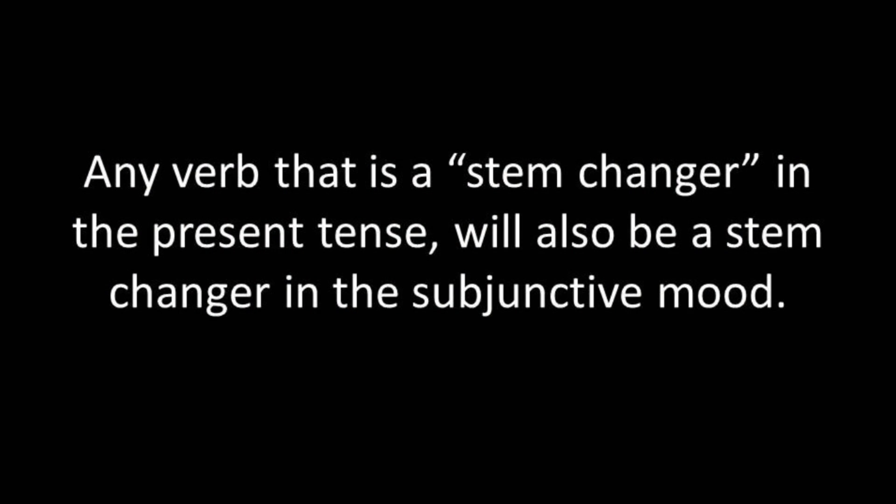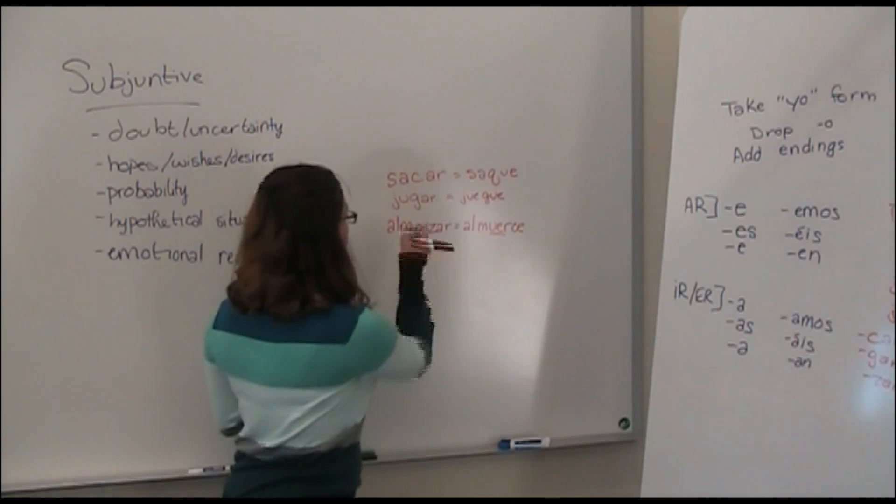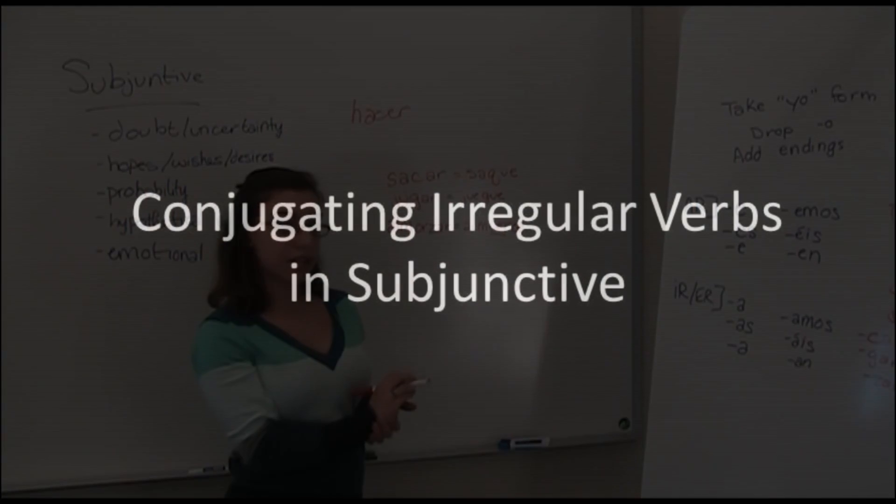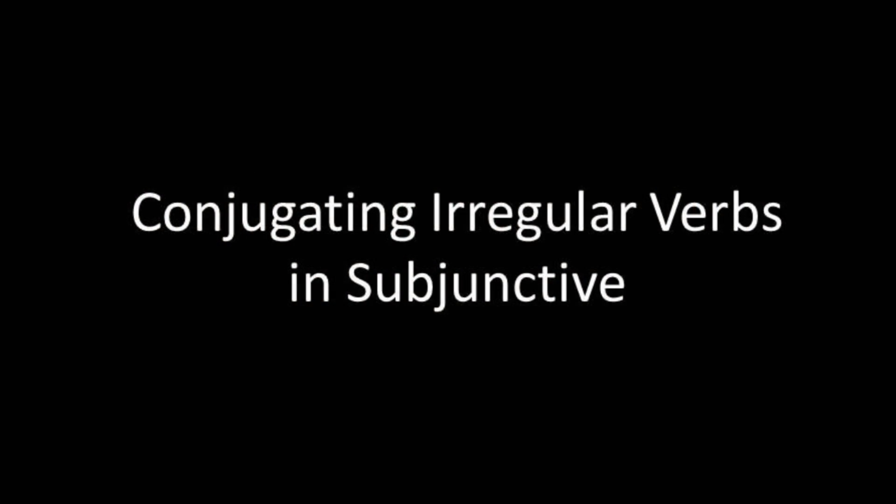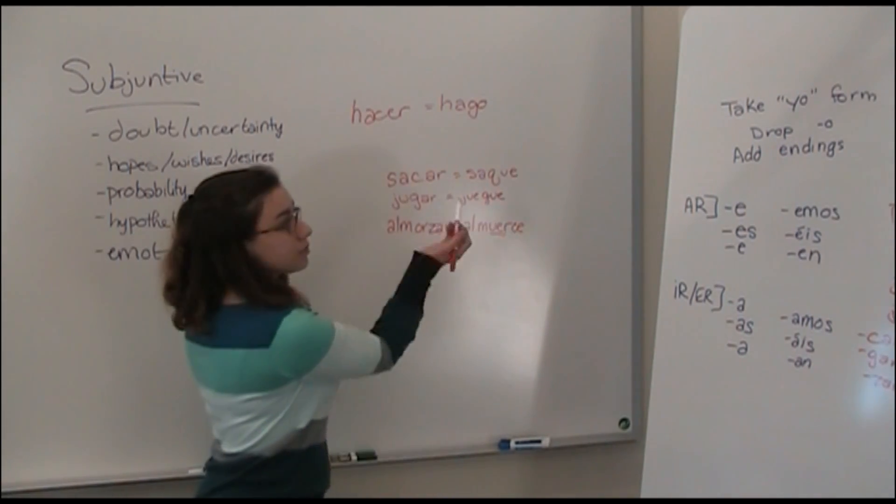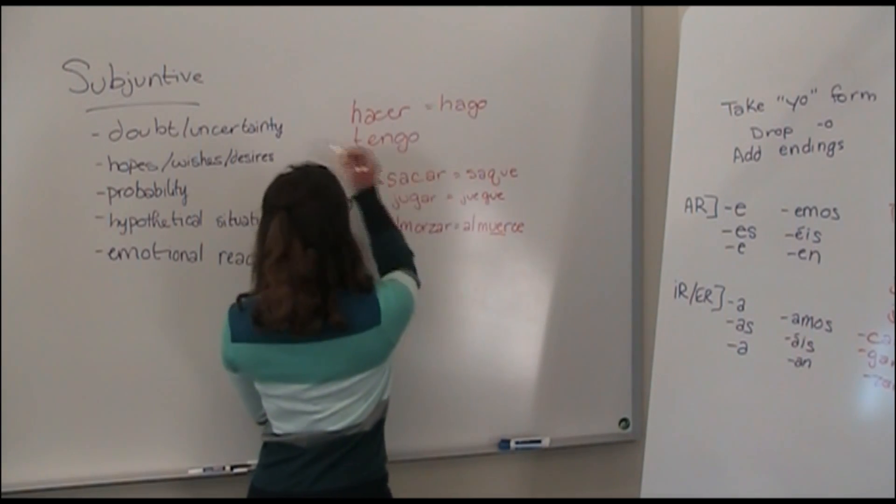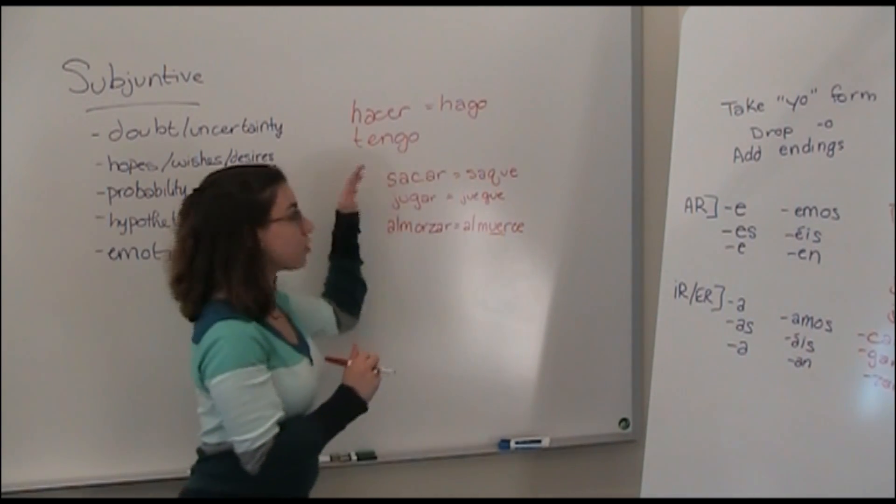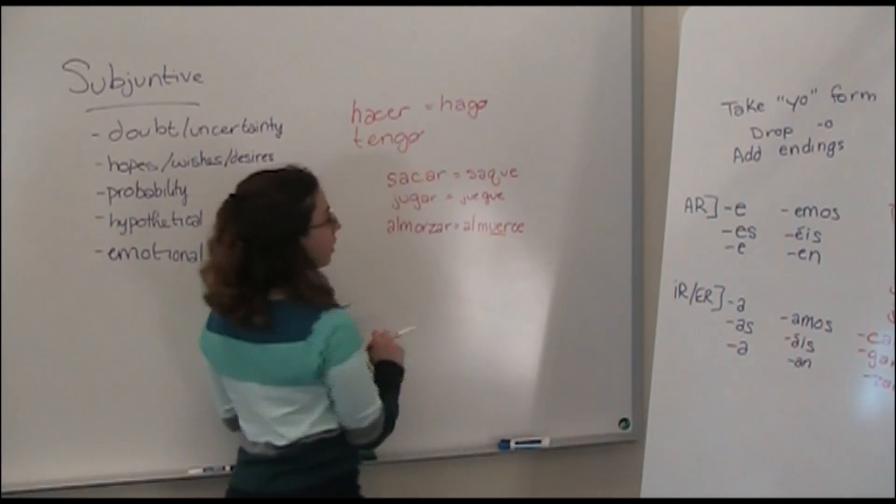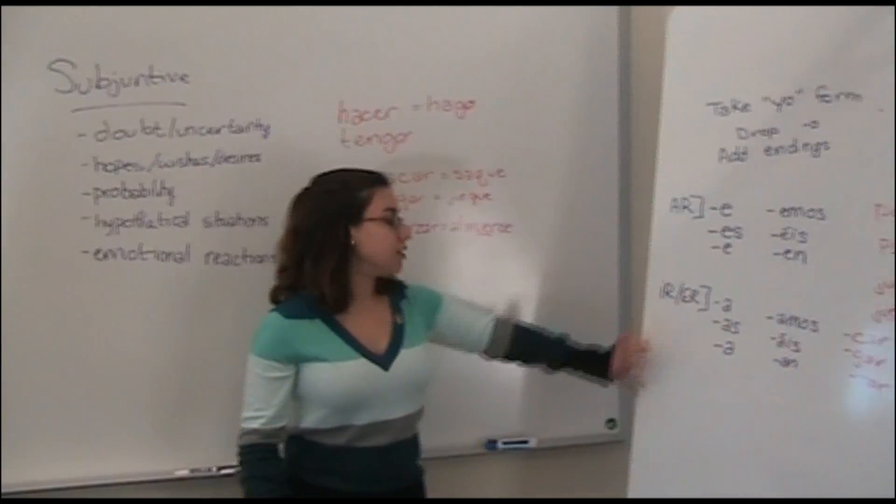Just be careful of that, keep an eye out. Same with these endings, which will change in the subjunctive. Taking a look at that, hacer, when you conjugate it in the present, yo form changes to hago, tener, tengo. And so those verbs, as you can see, have a difference. So you just drop the o in that yo form, keep the irregularity, and then you will conjugate it using whichever ending that you need.